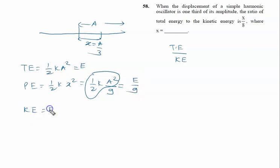Kinetic energy is total energy minus potential energy, so it is eight by nine times E. The total energy is E, kinetic energy is eight by nine E. E will be cancelled, so the ratio is nine by eight.